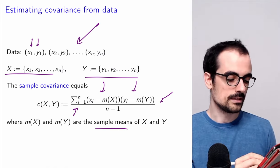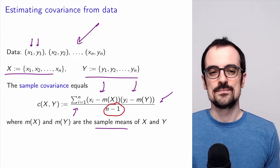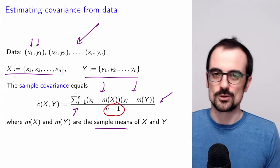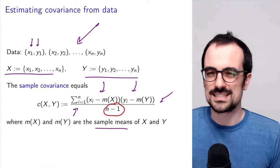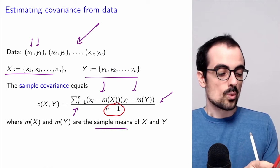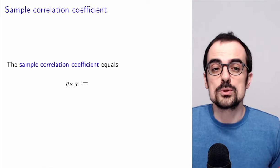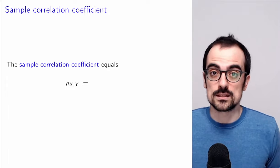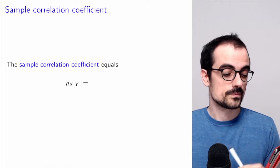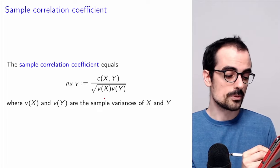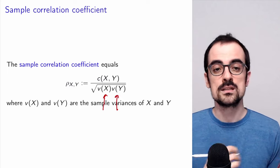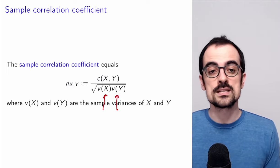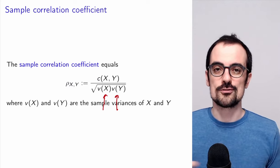You might notice that we're dividing by N minus one. This is just so that the estimator is unbiased — we'll discuss that more in future videos, but in practice it doesn't really make a difference. Once we have a sample covariance, we compute the sample correlation coefficient by dividing by the sample standard deviations, which are also computed from the data. Specifically, we divide by the square root of the product of the sample variances. This gives us the sample correlation coefficient of a data set.